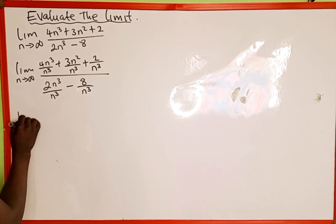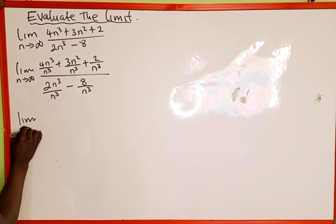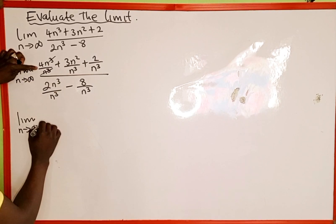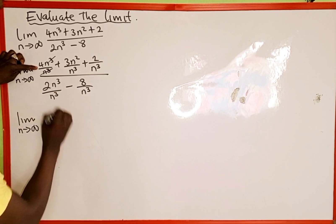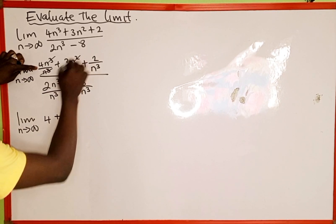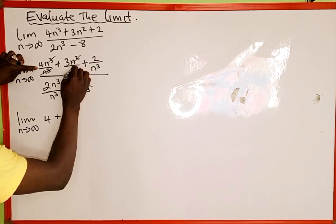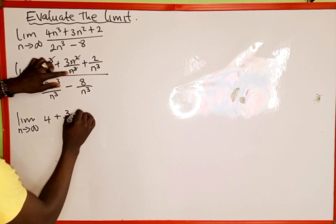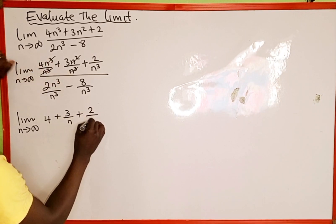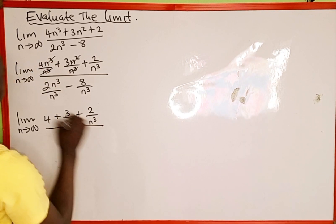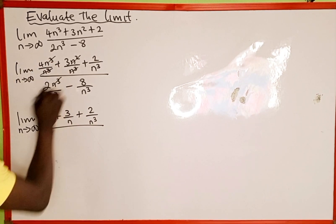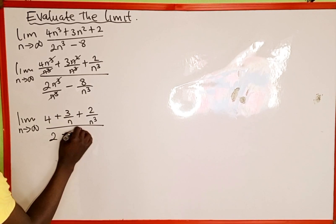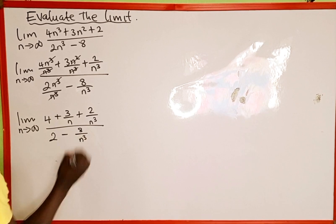So this is going to be limit as n approaches positive infinity. n³ cancels n³, and we are left with 4. Then n² cancels n², leaving 3/n. Then plus 2/n³. And in the denominator, n³ cancels n³, leaving 2, then minus 8/n³.